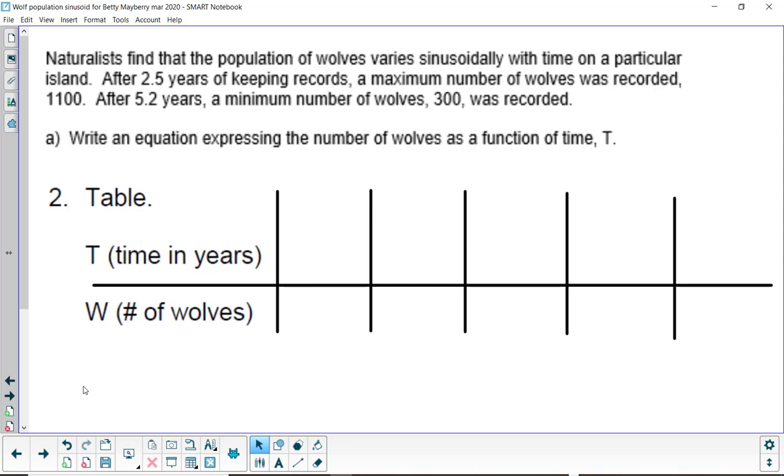Making a table. The table is going to record time in years and then number of wolves. So, I'm going to use capital T for time in years, and W for the number of wolves. Pause and fill in your own table there, and then press resume when you're ready. Putting these numbers in the table, at 2.5 years, we're at 1,100 wolves. And at 5.2 years after keeping track of this, 300 wolves.